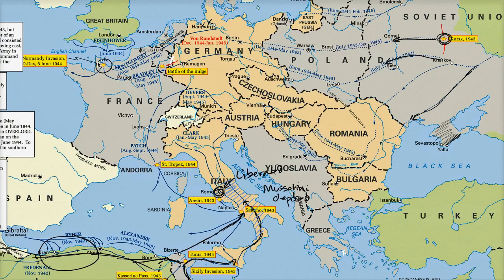You have the invasion of Normandy, the amphibious invasion of Normandy, probably most famously depicted in the opening scenes of Saving Private Ryan, where you have primarily British and American troops. They're able to storm the beaches of Normandy successfully, which allows them to start making progress in northern France towards Germany.